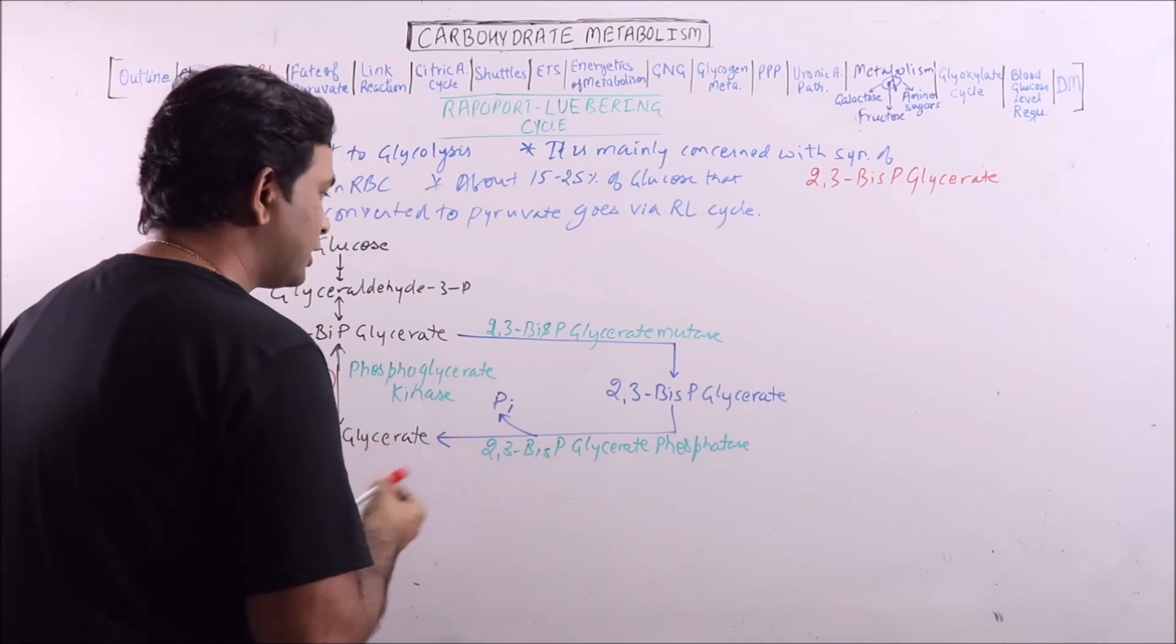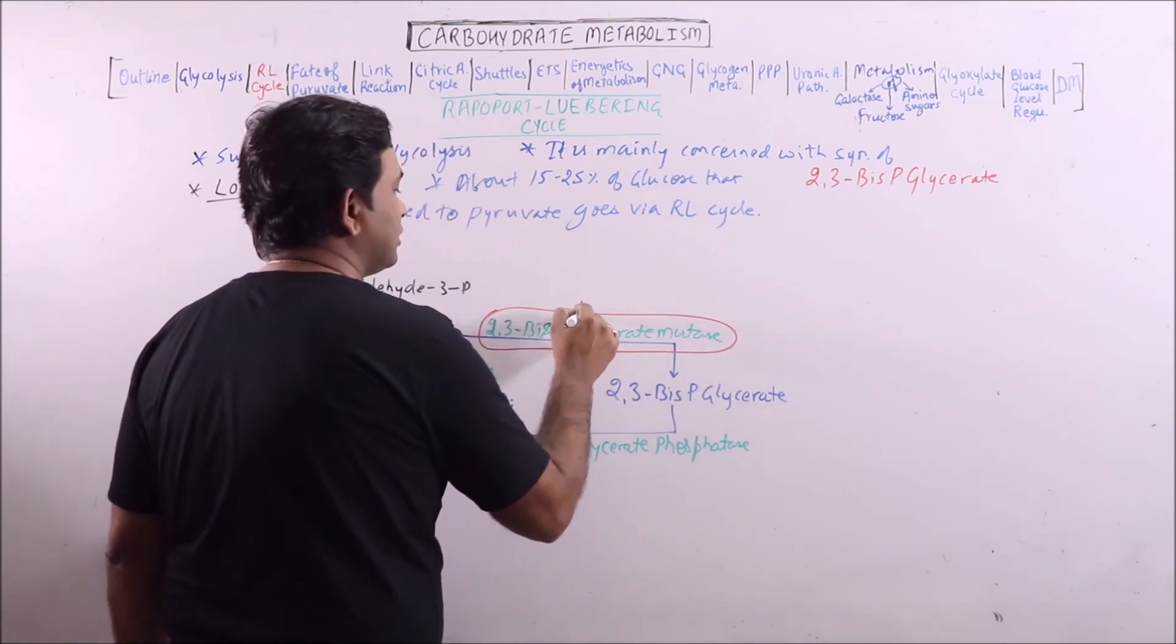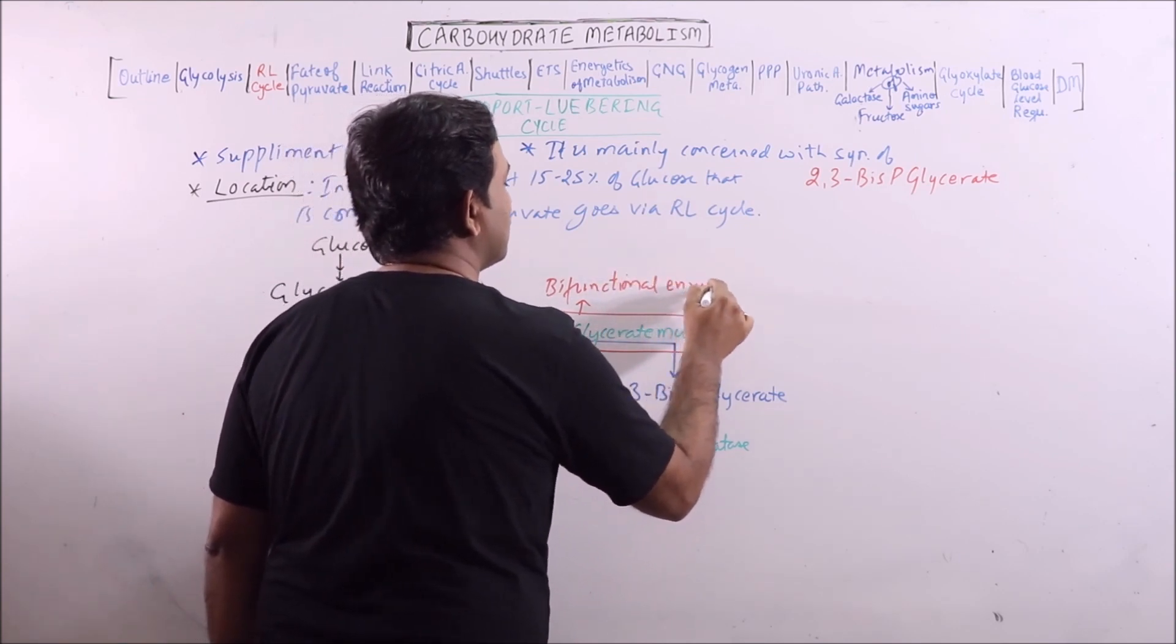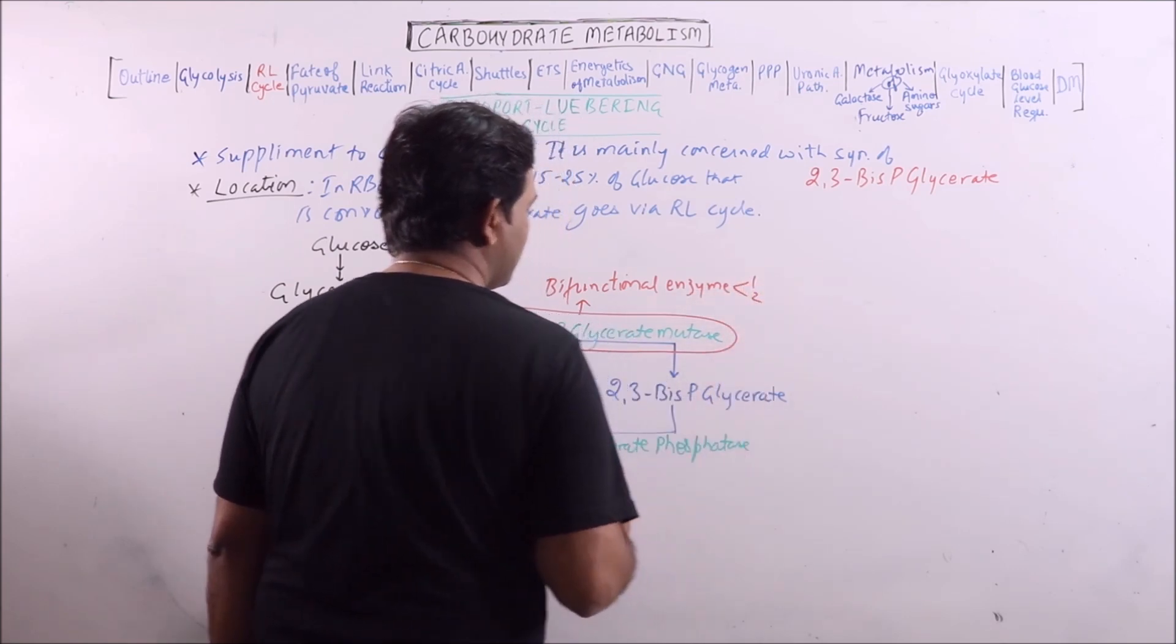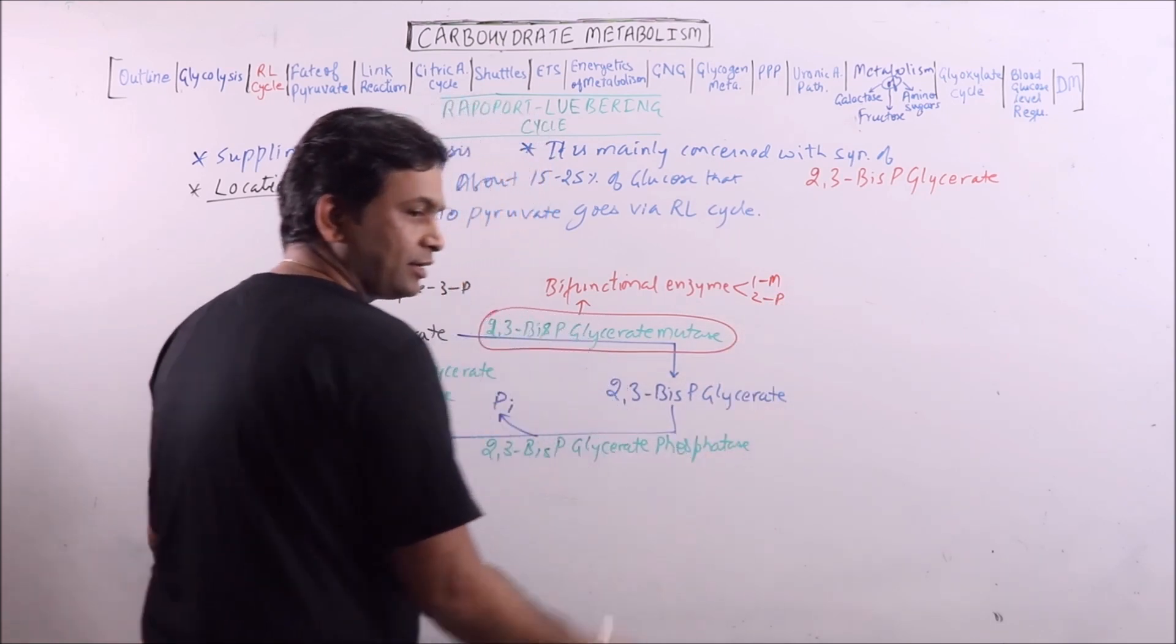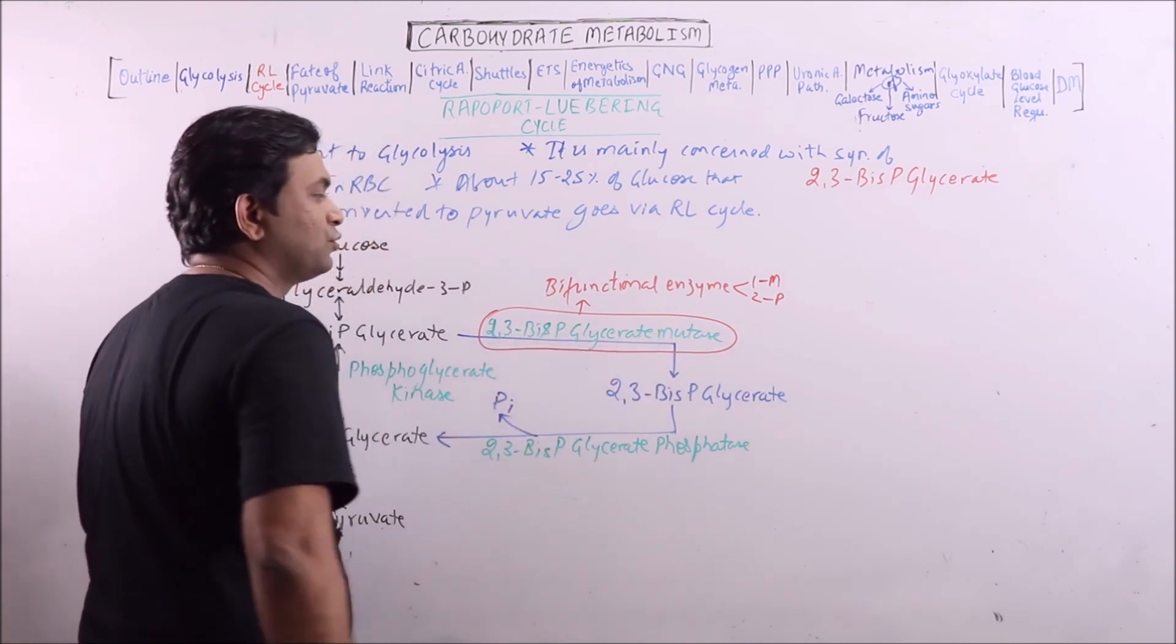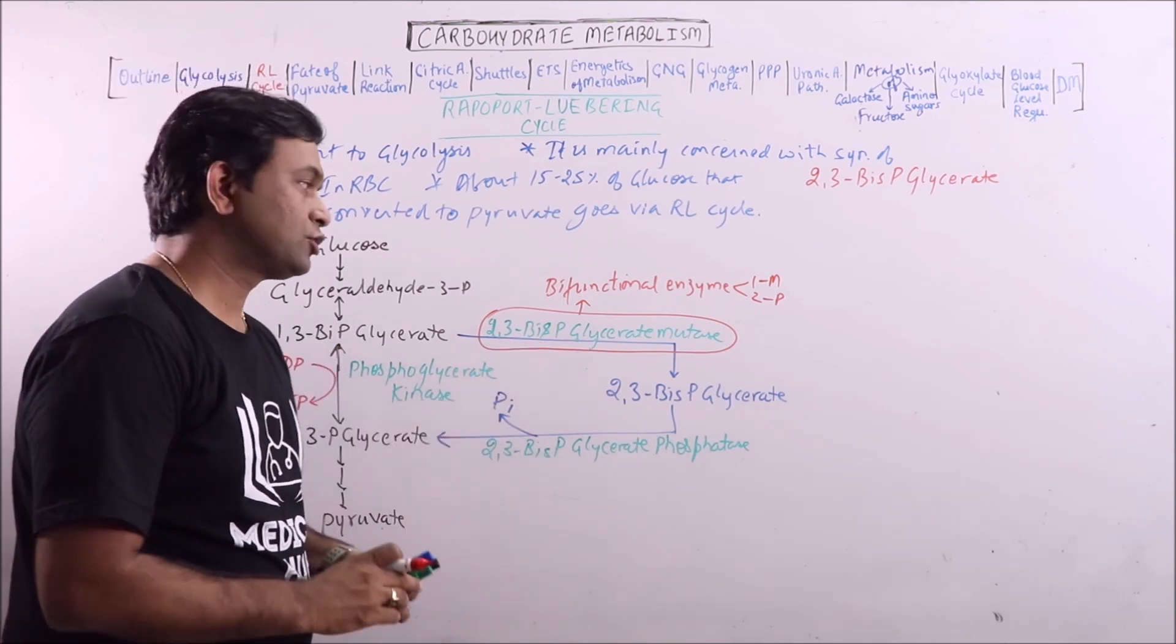It is important that this enzyme, 2,3-bis-phosphoglycerate mutase, is basically a bifunctional enzyme having two sites, one for mutase activity, another for phosphatase activity. So, these are not two different enzymes, but two actions of the same enzyme. Here we can observe that no ATP is formed.